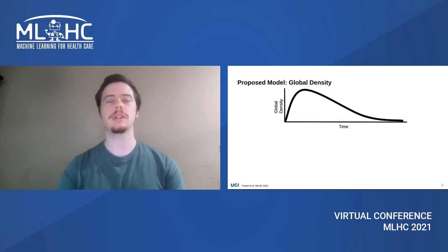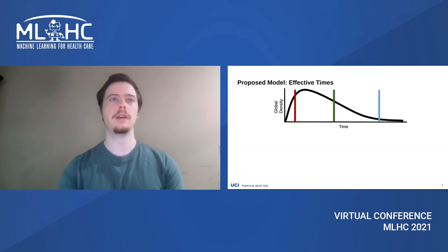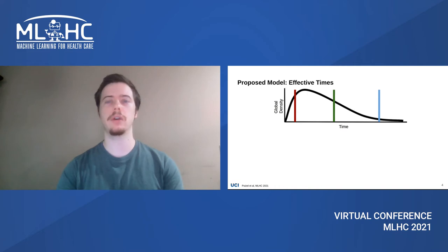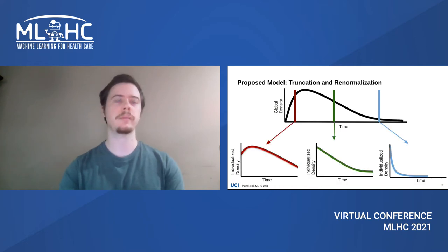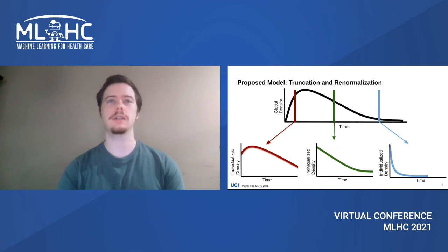To make these individualized predictions, we split our model into two parts. The first is a parametric global density representing the average density of time-to-event across all individuals. Given this global density, our model then learns a mapping from each individual's EHR data to effective times located within this global density, shown here in different colors. Given these effective times, we get individualized densities by truncating and renormalizing the global distribution at the effective times.